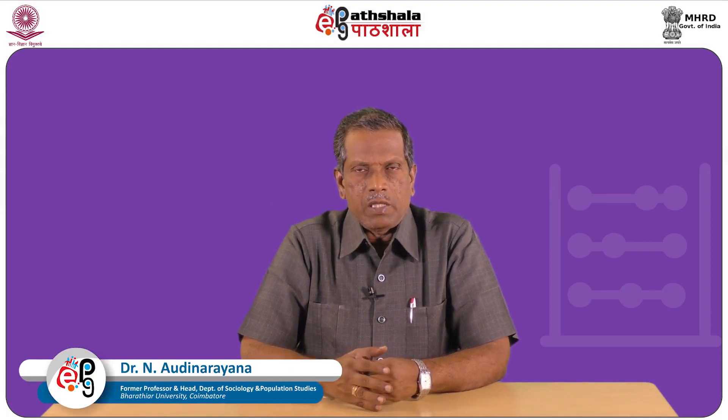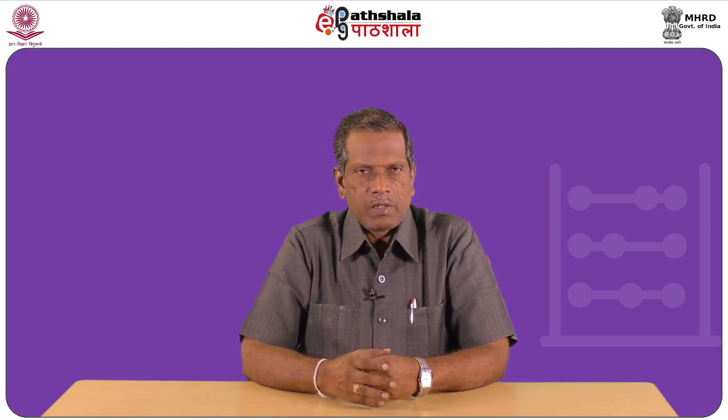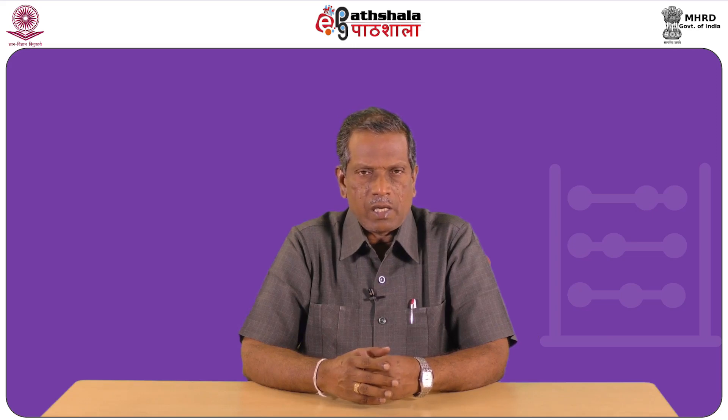Science can be said as a systematic enterprise that builds and organizes knowledge in the form of testable explanations and predictions about the universe. The term method means a way of doing something. Every science employs scientific or experimental method for the study of its material. Experimentation is possible in natural sciences like physics and chemistry, but in social sciences, pure experimental studies are difficult. Instead, social sciences undertake systematic study by observing, classifying, analyzing, giving explanations, and trying to make generalizations and predictions.